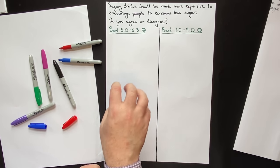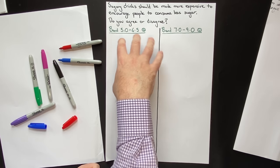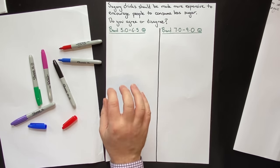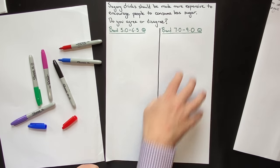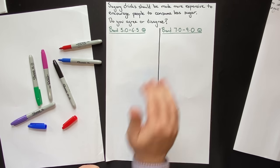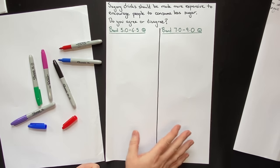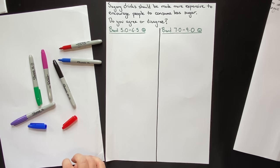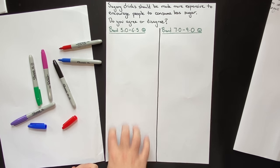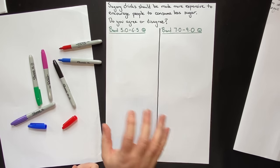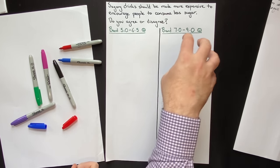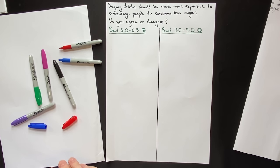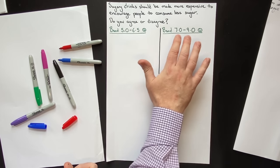In this video I'm going to show you what a Band 5 to 6.5 essay looks like in comparison to a Band 7, 8, or 9 essay. There are some very simple things that students who get a Band 8 or 9 are doing, and there are things you need to avoid. At IELTS Advantage, we teach you not only how to do the right things, but how to avoid the things that lead to lower scores.